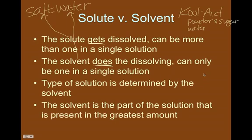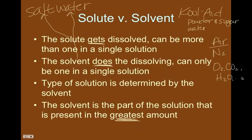If we were talking about air — just atmospheric air — the easiest way to recognize the solvent is that it's the part of the solution present in the highest amount. So the air is mostly made up of the solvent, which is nitrogen. And then the solutes are oxygen, CO2, water vapor, and a few other minuscule amounts of gases. But these are the three main solutes in air.